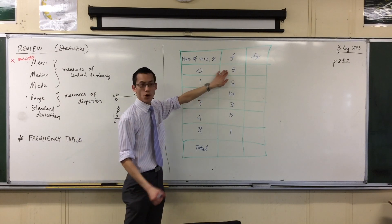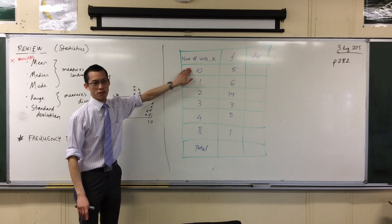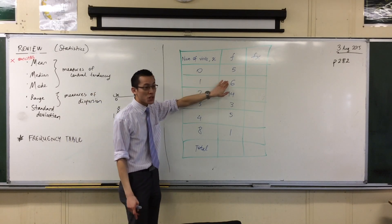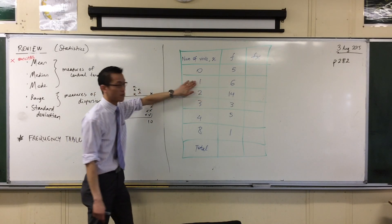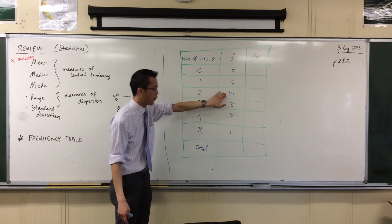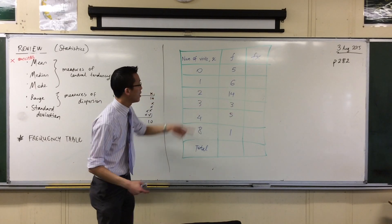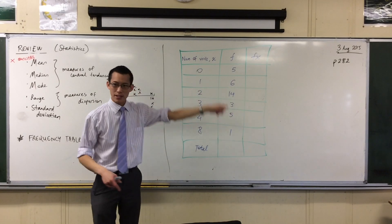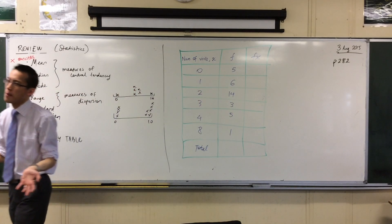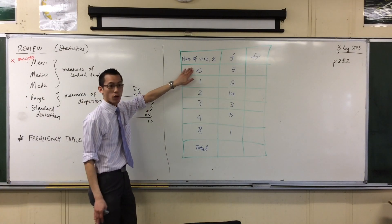So there are five people who didn't see the doctor at all in that whole three-month period. There's six people who visited once in that season, and 14 people who visited twice, and three people who visited three times, and so on. So frequency is how many people or how many things have gotten this score.